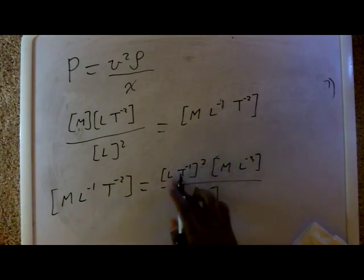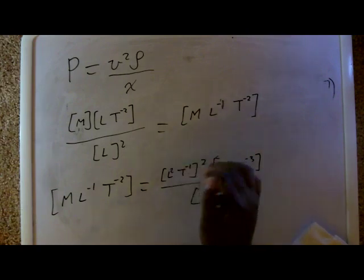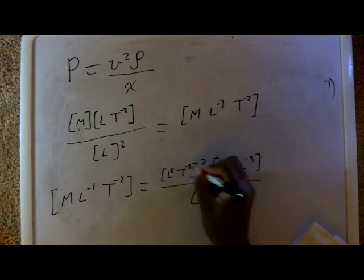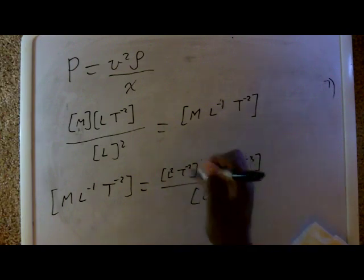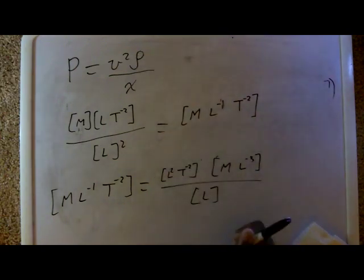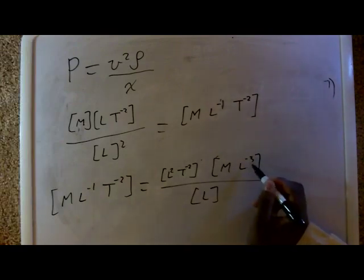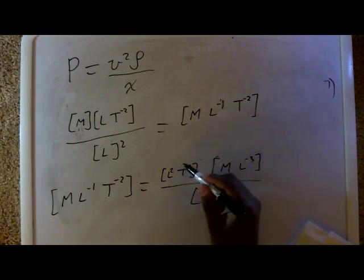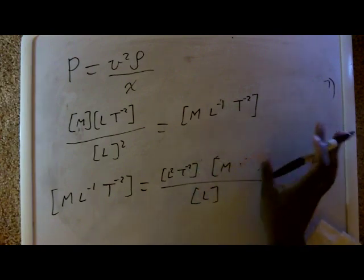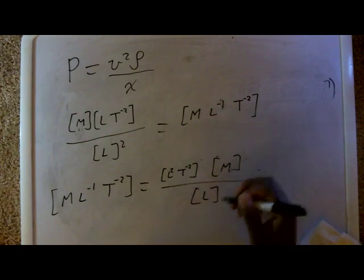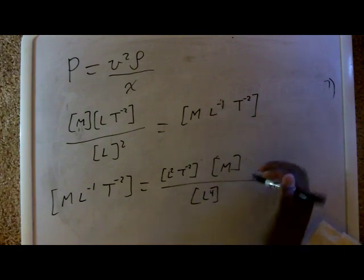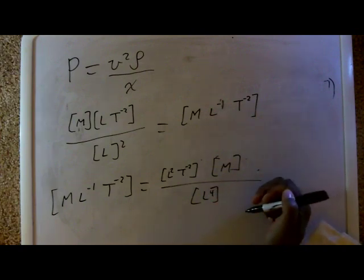If I distribute the two into there, it would be this. I just distribute that two inside. So what's going to happen is, I'll bring this, that was the L3 down here, so this would be L4. I just brought it down.